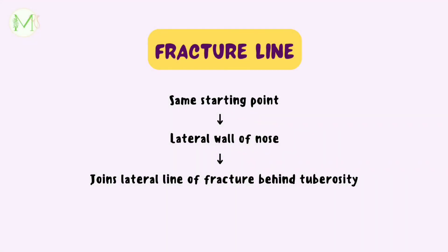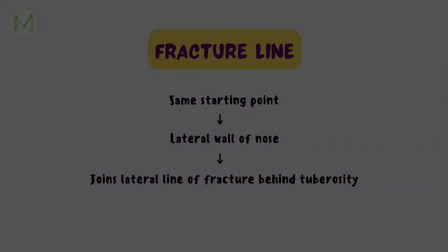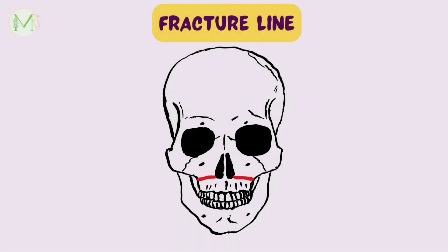At the same time, from the same starting point, the fracture also passes along the lateral wall of the nose and joins the lateral line of the fracture behind the tuberosity. In this picture, we can see the Le Fort 1 fracture line clearly.